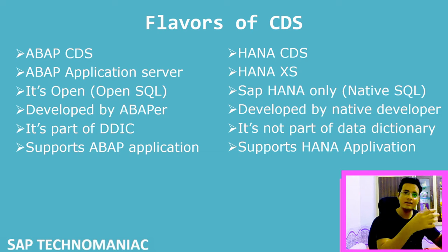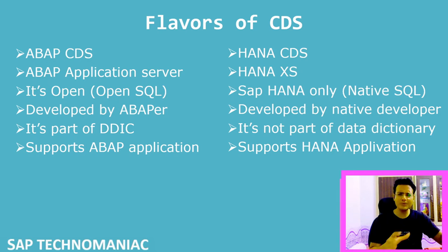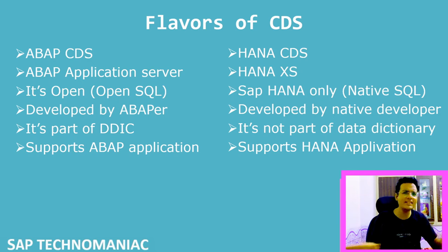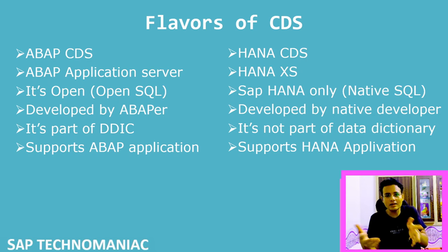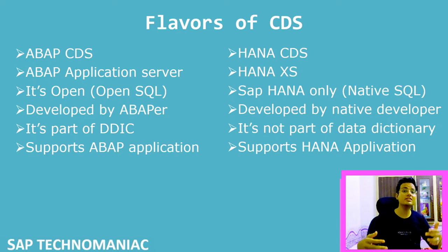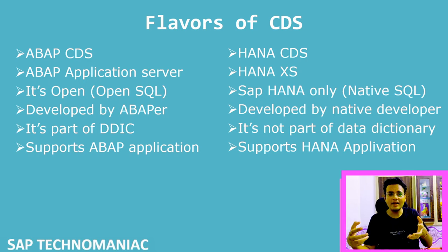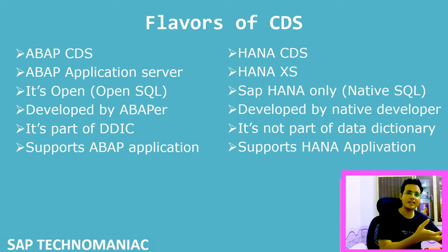HANA CDS is used by HANA-specific applications — there is no application server involvement at all. You can directly access HANA CDS on the HANA layer itself. ABAP CDS, on the other hand, is developed at the application layer by ABAP developers. The relationship is similar to Open SQL vs. Native SQL: ABAP CDS is like Open SQL and HANA CDS is like Native SQL.